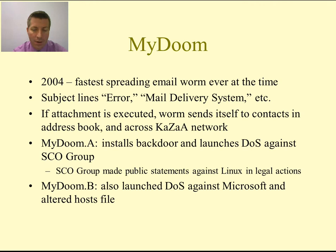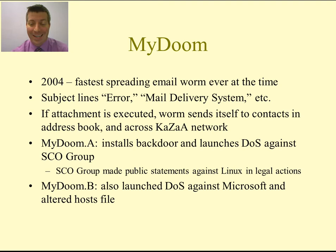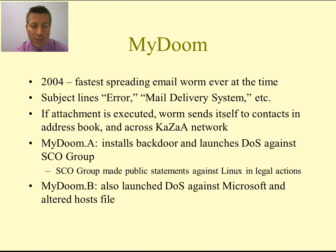There were two versions of MyDoom. The first installed a backdoor and launched a denial of service attack against the SCO Group, a company in Santa Cruz, California. There was talk that SCO was targeted because in legal proceedings they had spoken against Linux, suggesting this came from a Linux activist group. A lot of these worms were being sent back to the SCO Group, denying them internet access because there were so many requests flooding in due to how quickly it had spread.